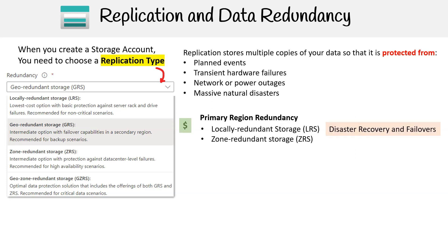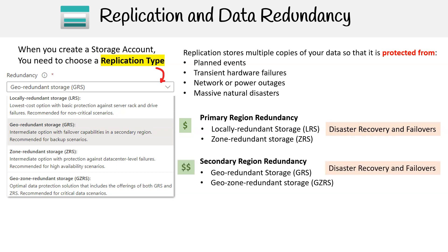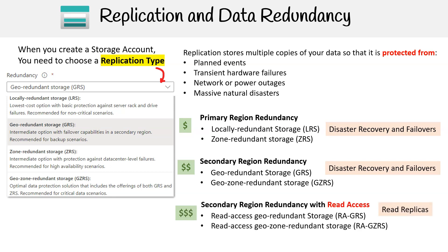Primary region redundancy includes locally redundant storage and zone redundant storage. Secondary region redundancy includes geo-redundant storage and geo-zone redundant storage. Secondary region redundancy with read access includes read access geo-redundant storage and read access geo-zone redundant storage.